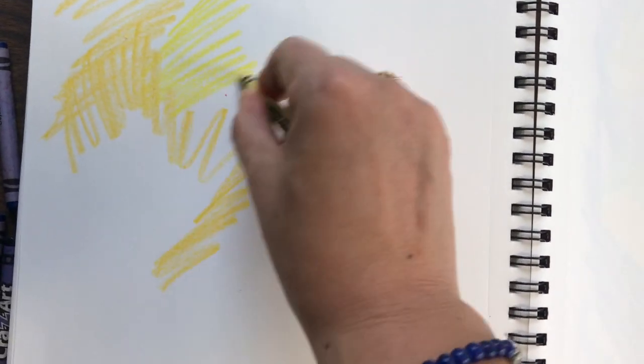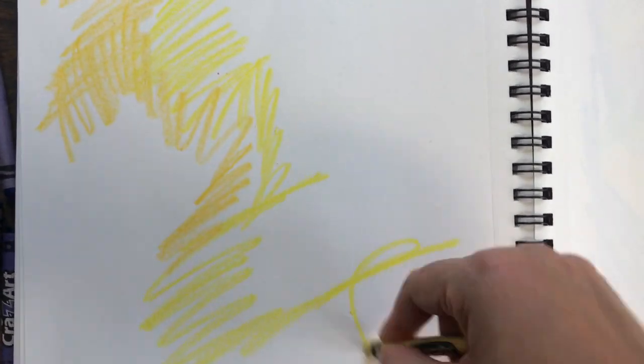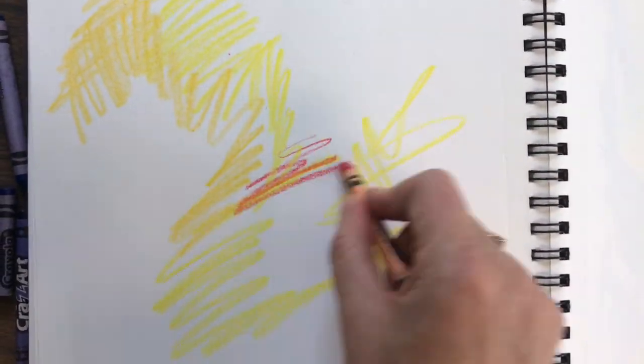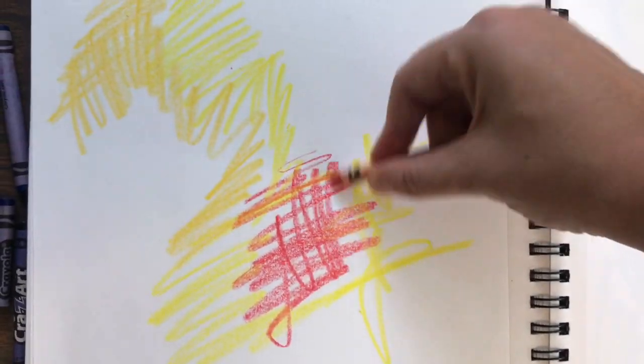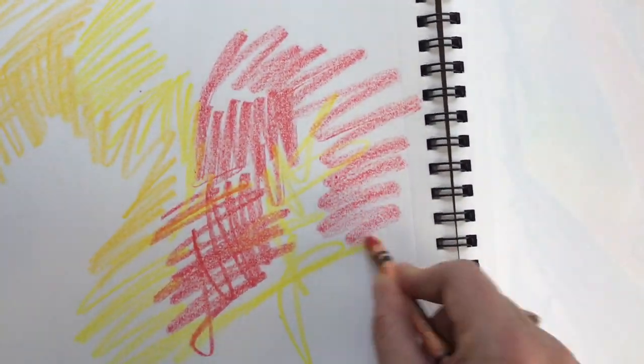We don't want to put them all in the same spot because we're going to cut this when we're done into little squares. So I am just scribbling. I know sometimes I'll tell you guys not to scribble-scrabble. In this case you can, but try and do it in a way where you're paying attention to what's going on.